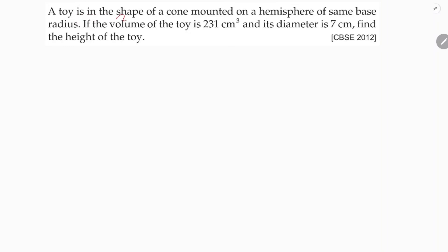A toy is in the shape of a cone mounted on a hemisphere of the same base radius. If the volume of the toy is 231 centimeter cube and its diameter is 7 centimeters, find the height of the toy.